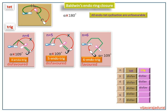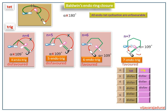Next we see the endo ring closure rule for the trig molecule with N equal to 7. Here α is also equal to 109 degrees, so it is a favorable reaction for endo ring closure.